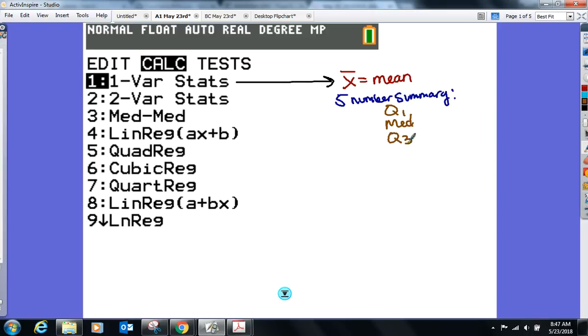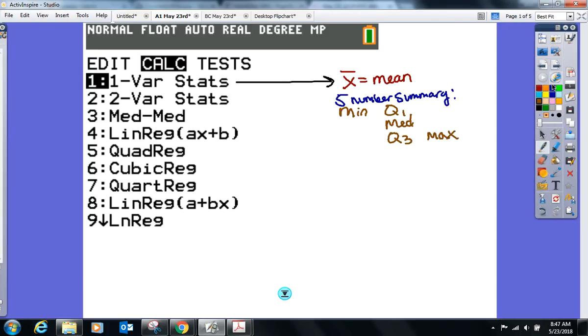Quartile three. And what are the other two values that consist of the five-number summary? Well, that's not part of it, though. Minimum and the maximum. Yep. All can be found on the calculator. What other values are on that one var stat? We're not even close to done.